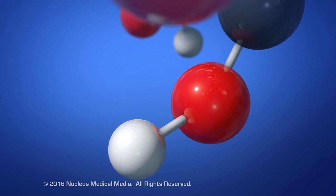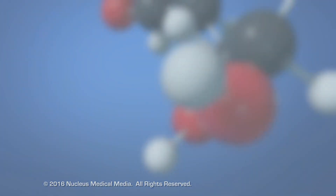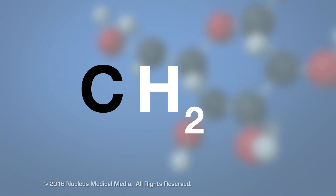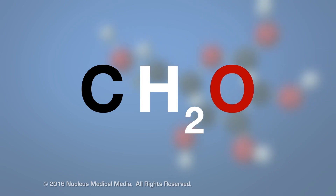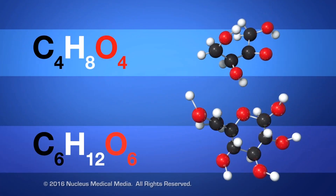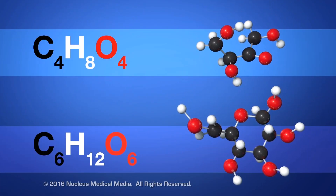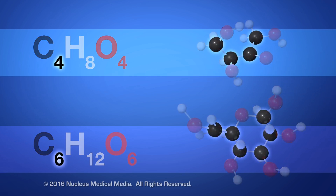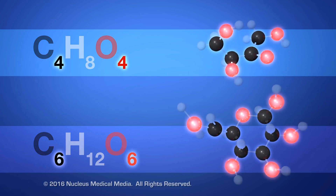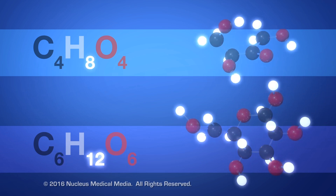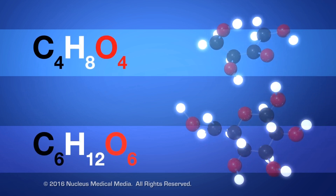Carbohydrates always contain these elements in a proportion of one carbon atom to two hydrogen atoms to one oxygen atom. All carbohydrate molecules will always have an equal number of carbon and oxygen atoms and will also always have twice as many hydrogen atoms.